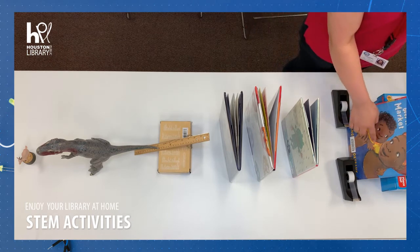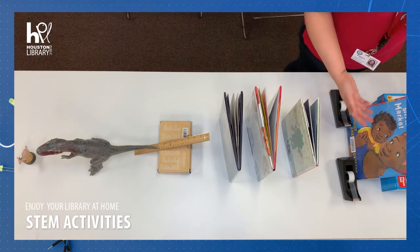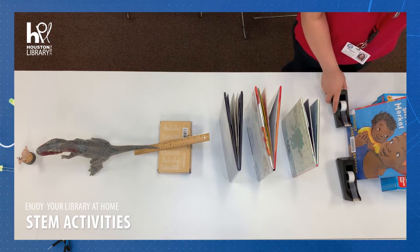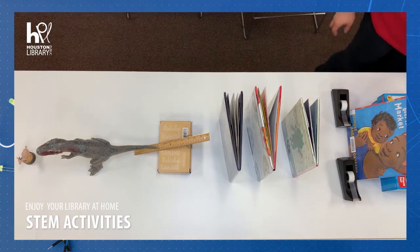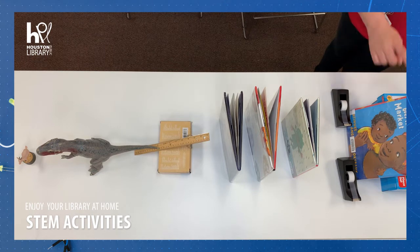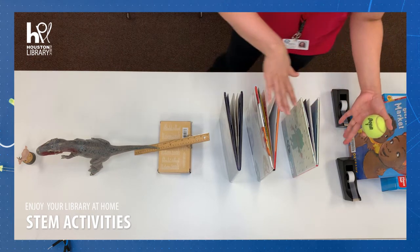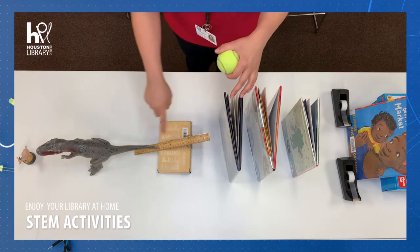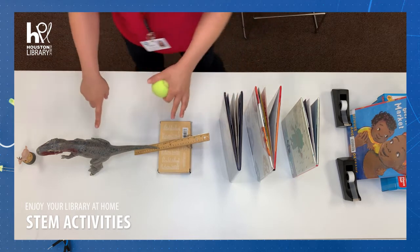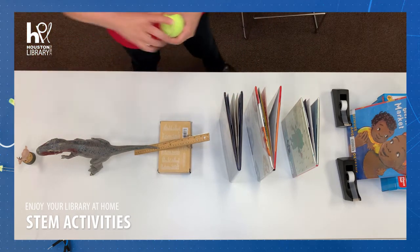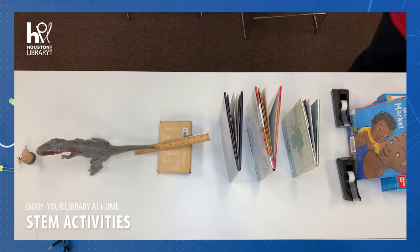The inclined plane allows the ball's energy to change from potential energy, which is stored energy, to kinetic energy, which is moving energy. So it will accelerate down the ramp and transfer that kinetic energy to the books, which fall over, transfer the energy to the lever, which transfers the dinosaur tipping over and landing it on the goat.